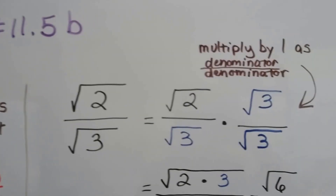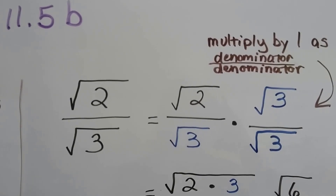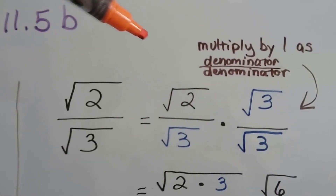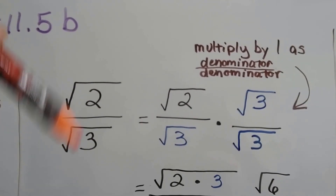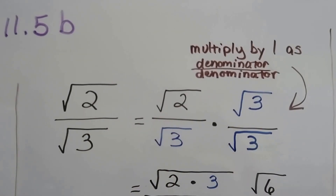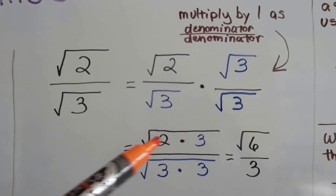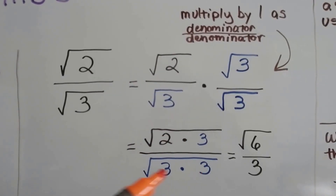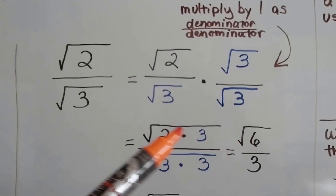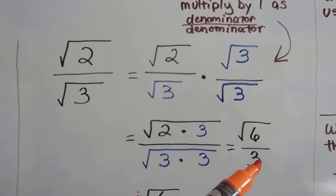Take a look at this one. We've got the quotient of the square root of 2 and the square root of 3. What we do is multiply by 1, written as the denominator over the denominator. That gives us 2 times 3 underneath this radical sign, and 3 times 3 under this radical sign. 2 times 3 is 6, so we've got the square root of 6, and the square root of 3 times 3 — which is 9 — is a 3.